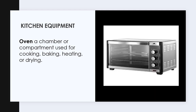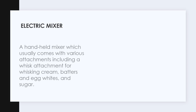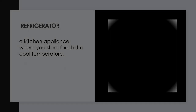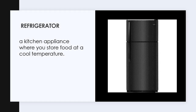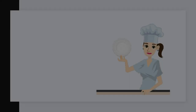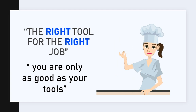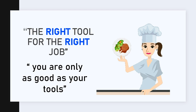Kitchen equipment includes: an oven, which is a chamber or compartment used for cooking, baking, heating, or drying. An electric mixer is a hand-held mixer that usually comes with various attachments including a whisk attachment for whipping cream, batters, and egg whites and sugar. A refrigerator is a kitchen appliance where you store food at a cool temperature. As the saying goes, the right tool for the right job — these sayings are very true when it comes to the choice and use of cooking equipment.